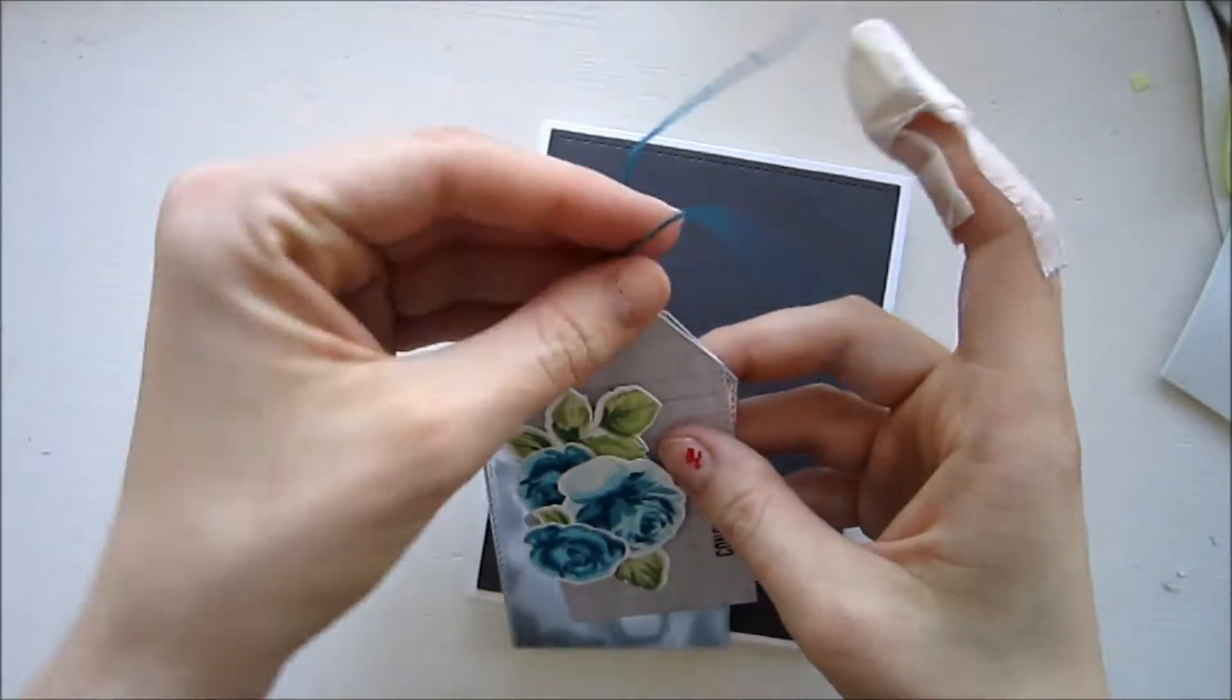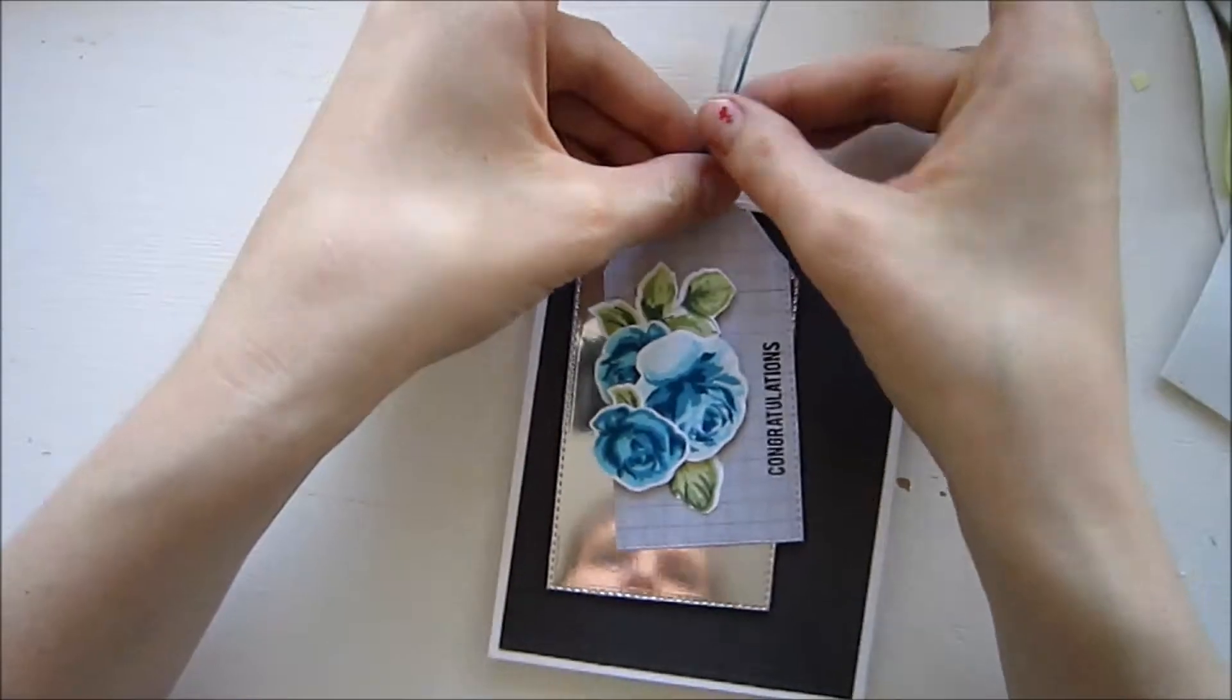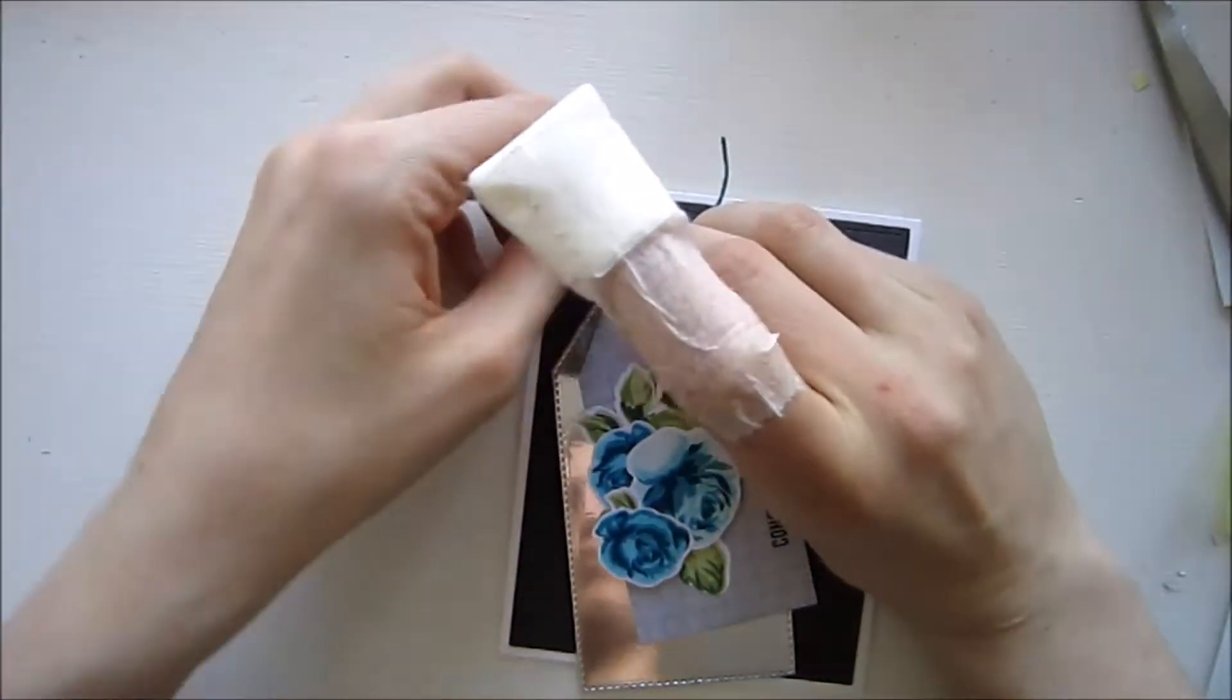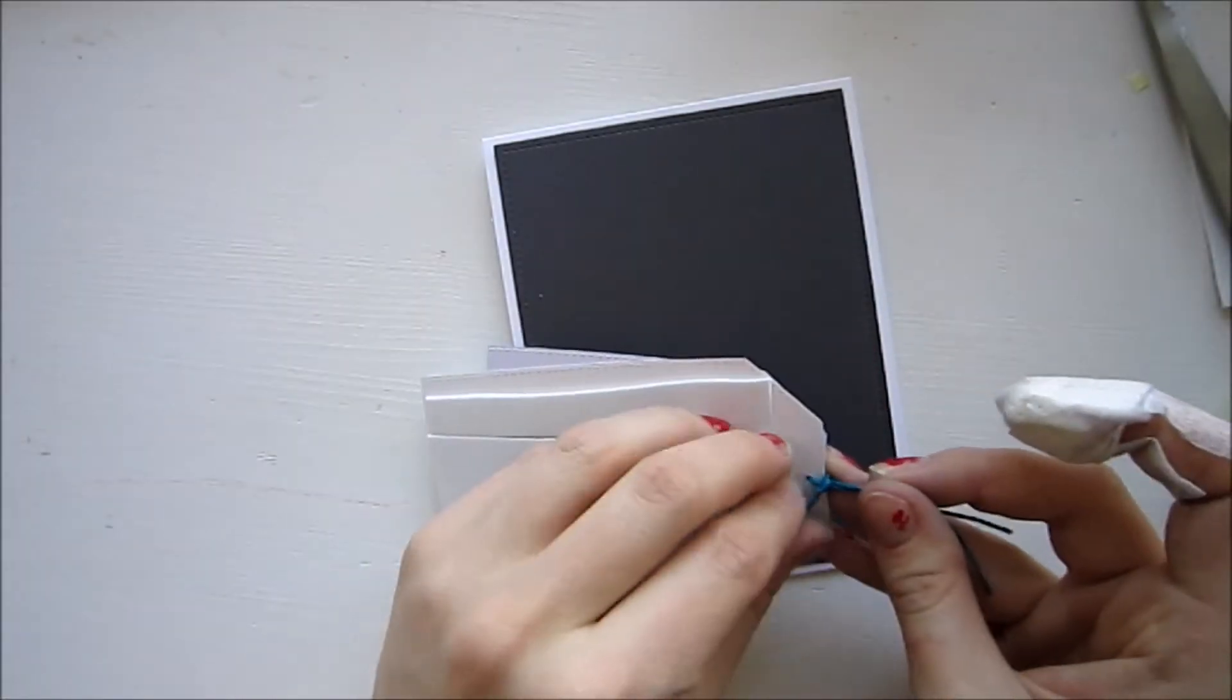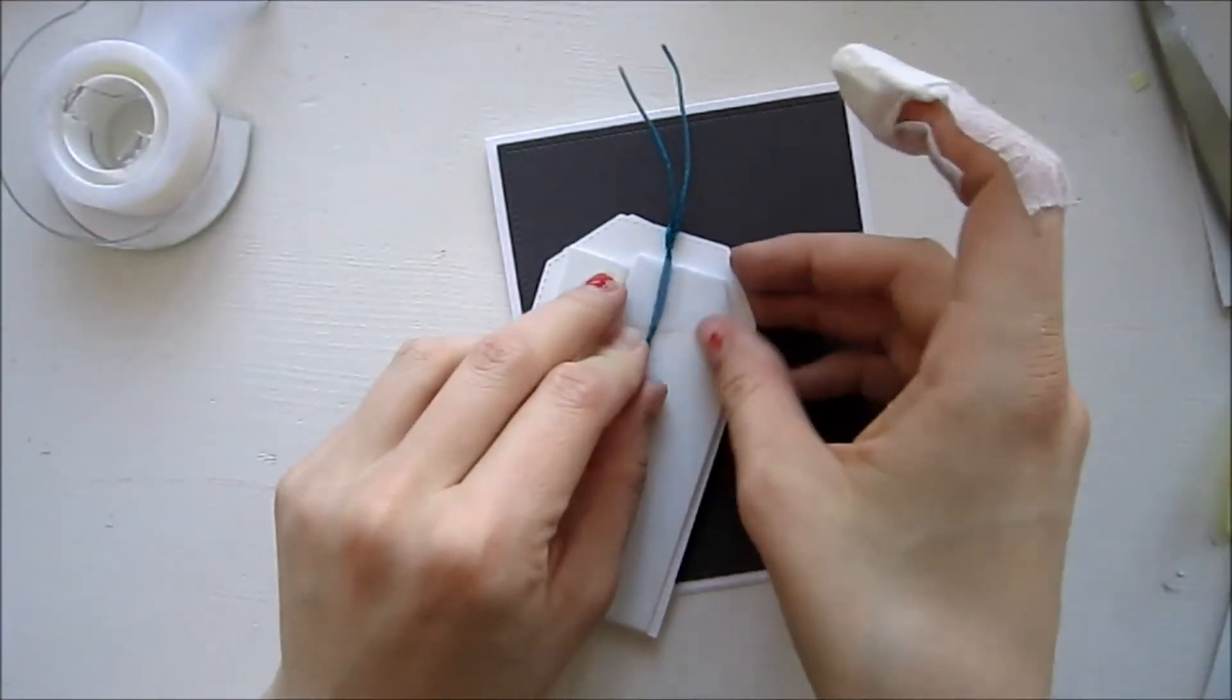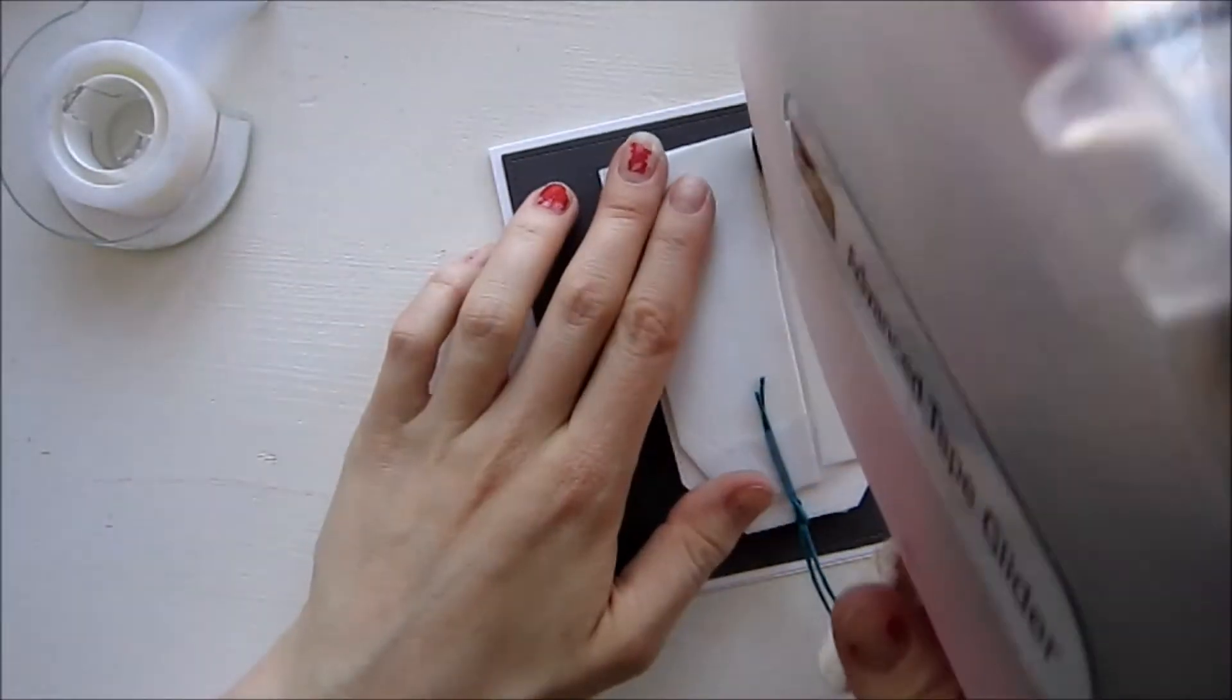This twine I actually colored myself. My camera stopped recording so I didn't get it on tape but I actually just took an alcohol marker. You can use a Copic marker or I used a Spectrum Noir marker to color it and you can get whatever colors you want on your twine so it perfectly matches your product. To adhere that excess that we wrapped around the twine I just use a piece of scotch tape.